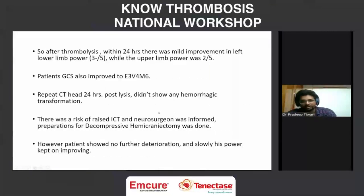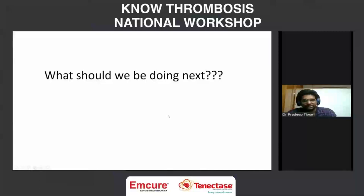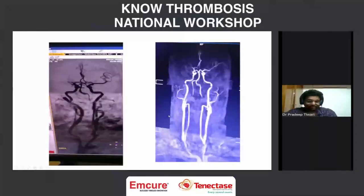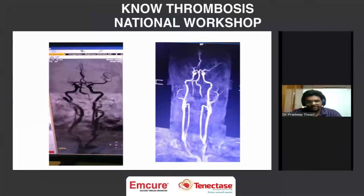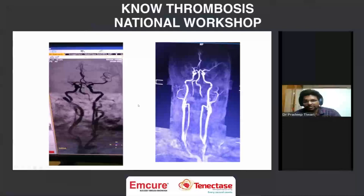Two discussion points: First, why was the NIHSS so bad? One possibility is that she had a seizure and was in a post-ictal state — there was no big infarct but NIHSS was much worse than expected. Second, the dose of tenecteplase in patients weighing beyond 90 kg: for alteplase the cap is 100 mg, but for tenecteplase it is typically 20 mg — whether the dose should be increased further or was appropriate remains a question.